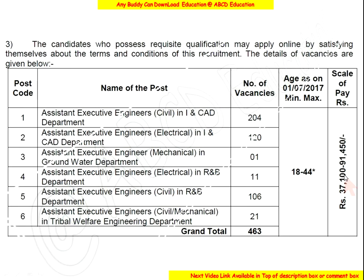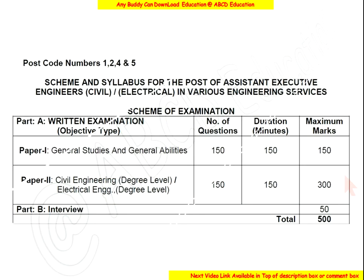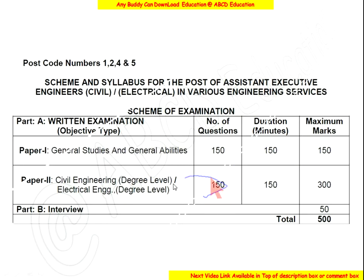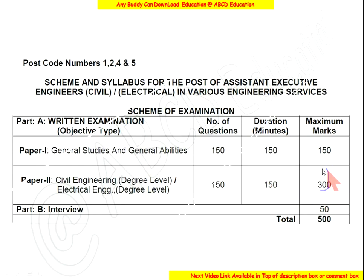The syllabus of this examination consists of General Studies and General Ability: 150 questions, 150 minutes, 150 marks. For professional knowledge — Electrical Engineering — the total number of questions is 150, duration is 150 minutes, each question is 2 marks, and total marks is 300. There are also 50 marks for entry, making the total marks 550.